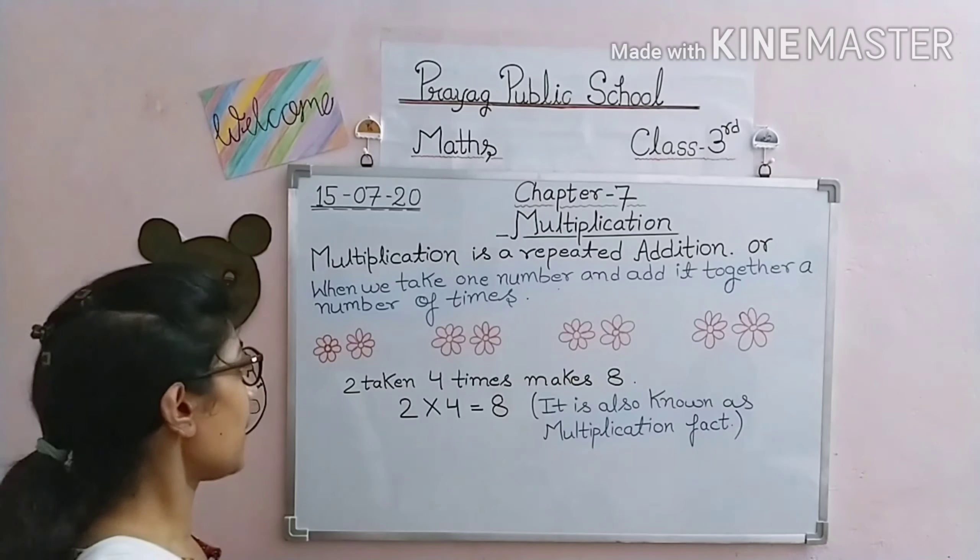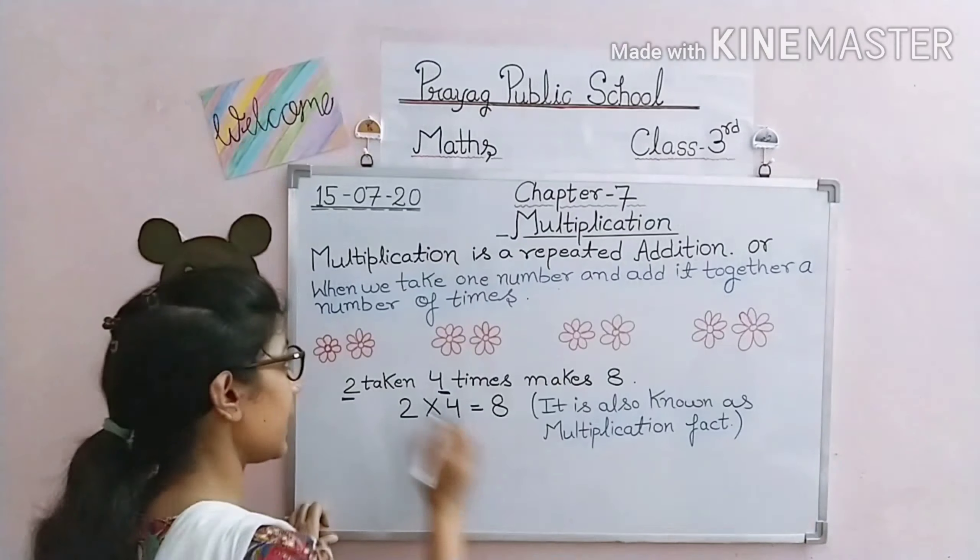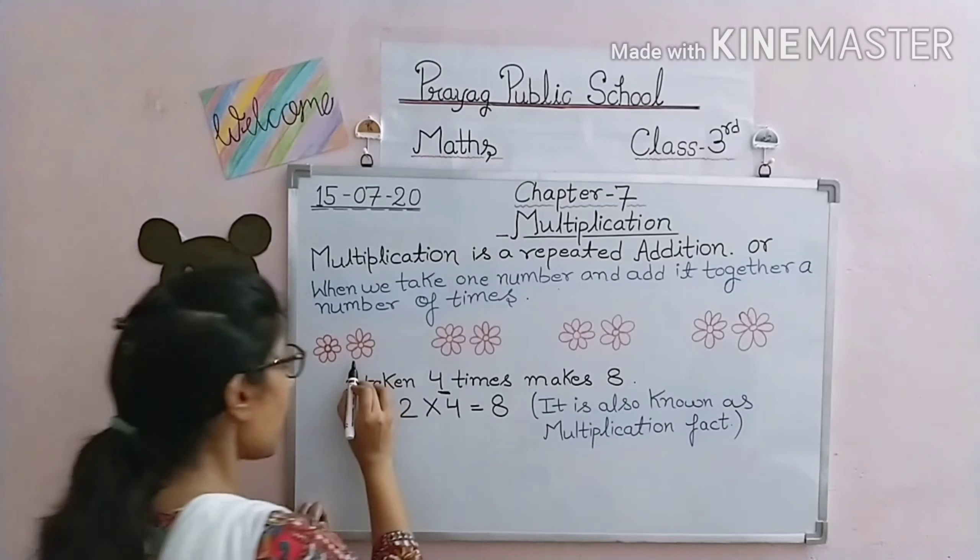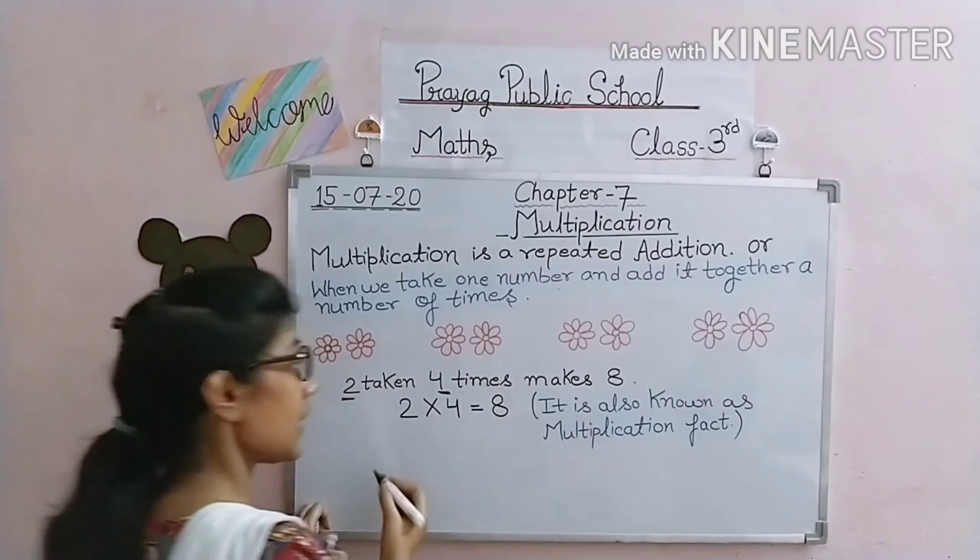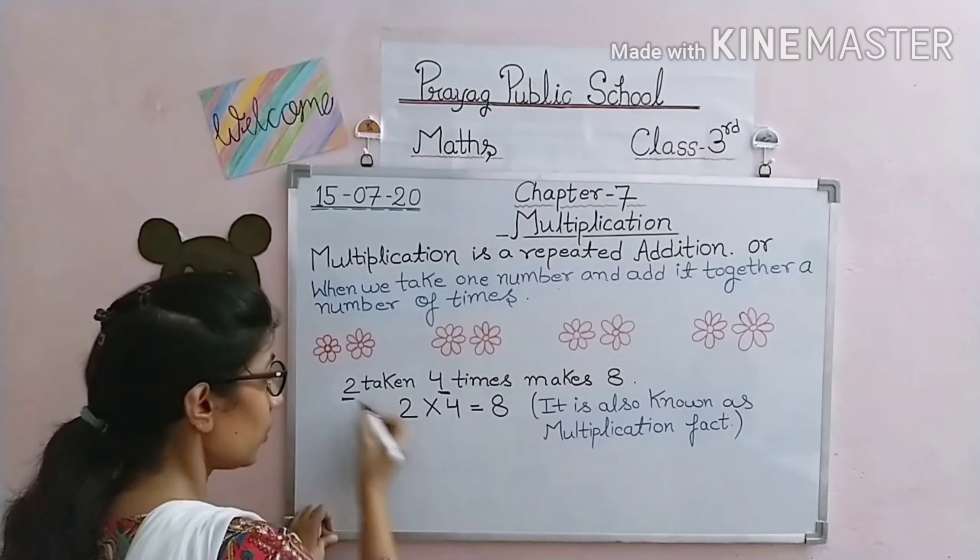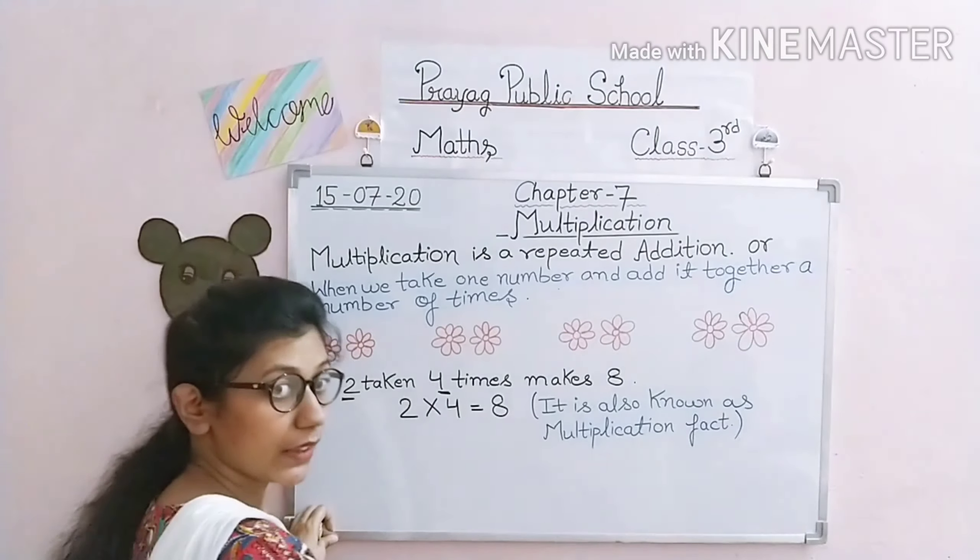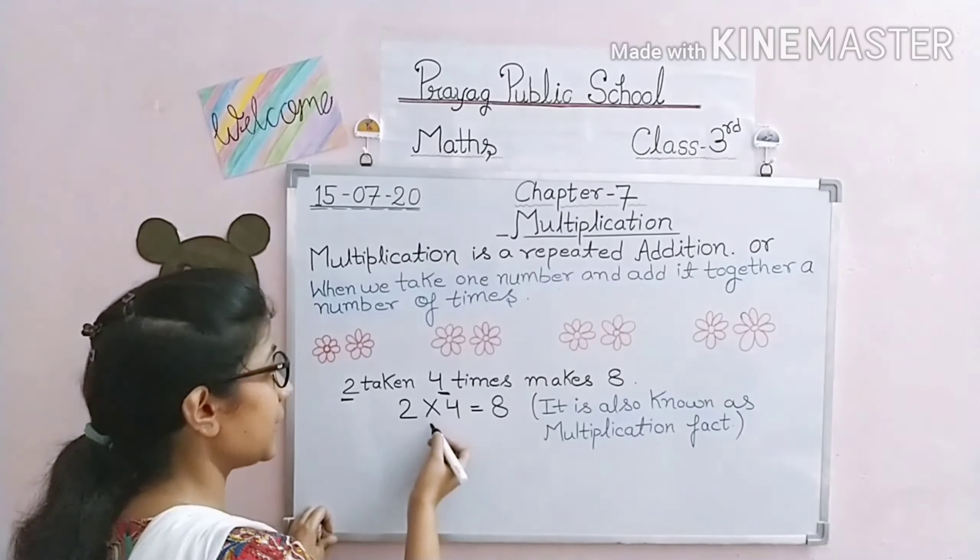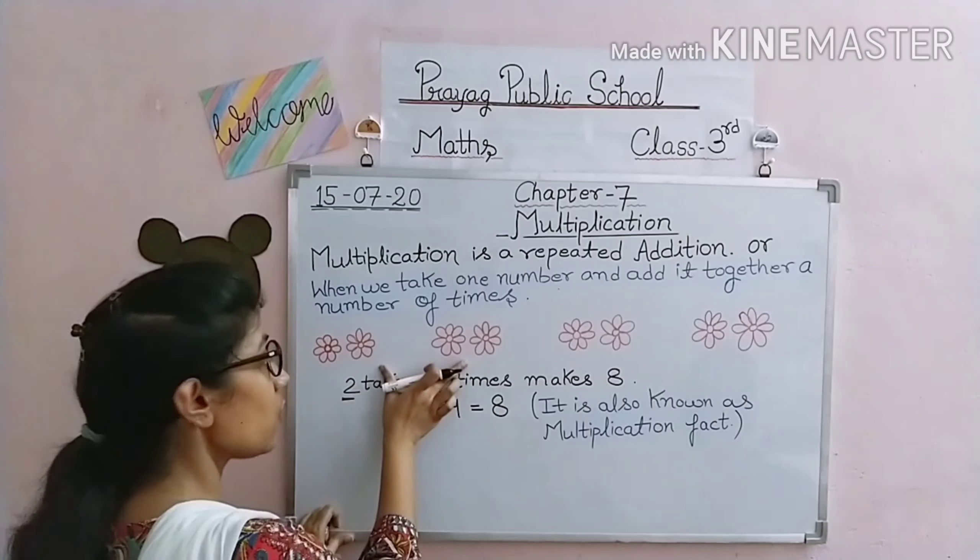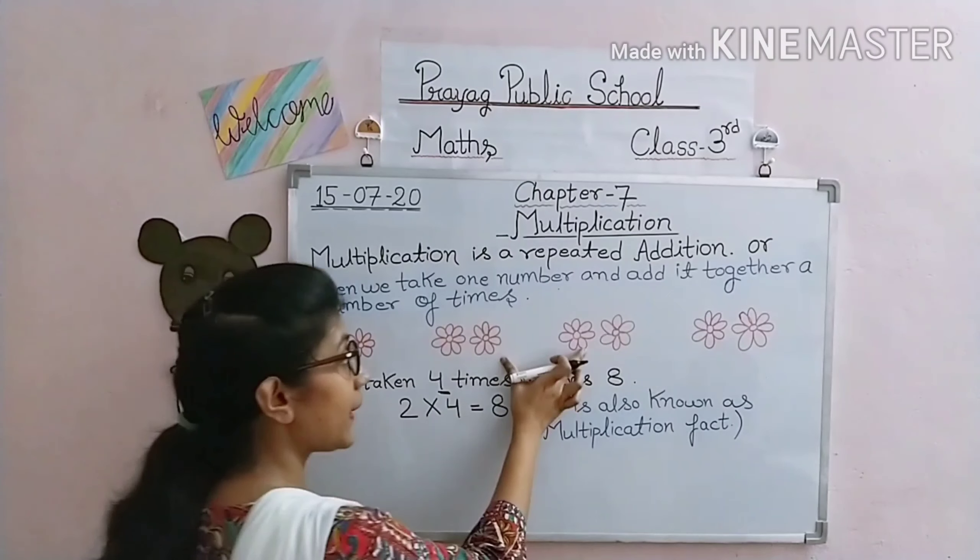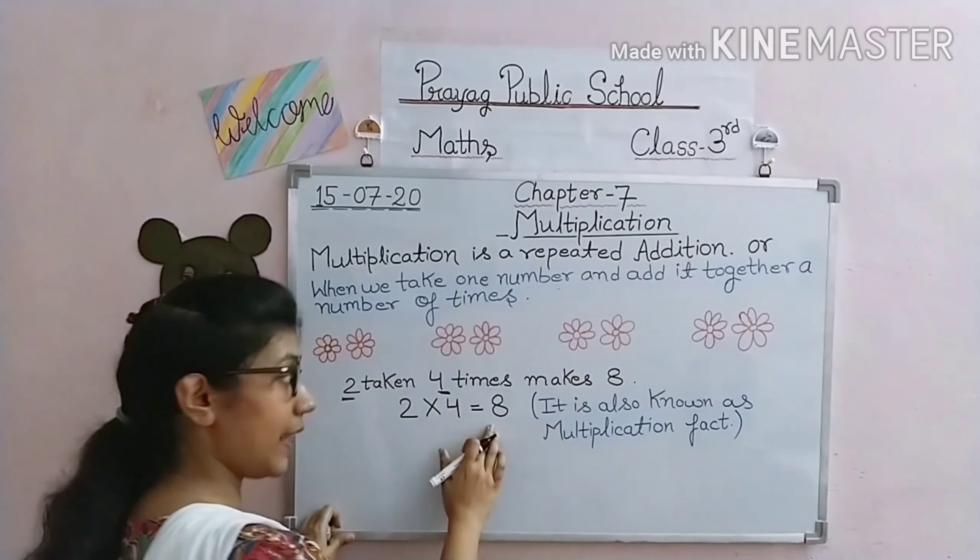If we take two, four times - one, two, three, four - 2 ko agar hum 4 times len to hamein kya milega? Makes 8. We can also write this as 2 multiplied by 4 equals 8, because we know 2 fours are 8. We can either multiply to find out, or we can simply add: 2 plus 2 is 4, 4 plus 2 is 6, and 6 plus 2 is 8.